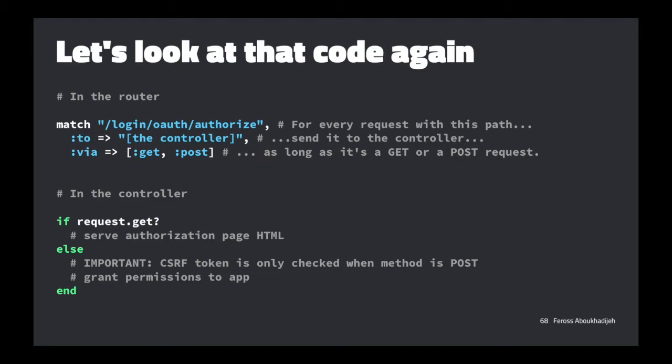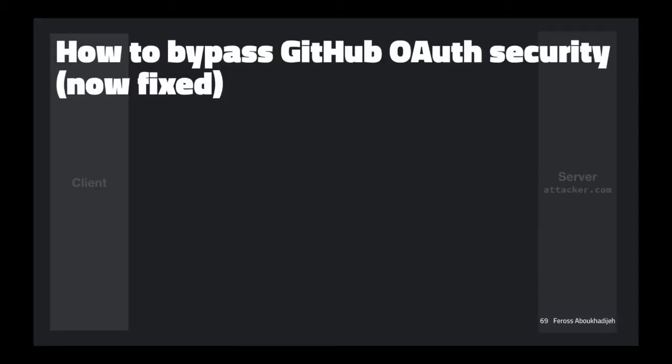Basically you just send a HEAD request to the app you want to authorize and that user automatically accepts that app on their account — one request. Very, very elegant. GitHub responded to the HackerOne report in eight minutes, acknowledged it, confirmed it was very easy to test — just sent a HEAD request and saw the issue. They had it fixed in three hours. It was a very severe issue so they were on it right away, and they paid out $25,000 — the highest bounty GitHub has ever paid.